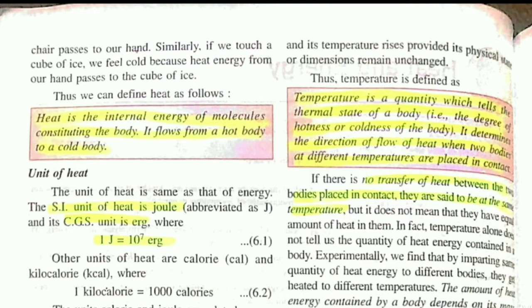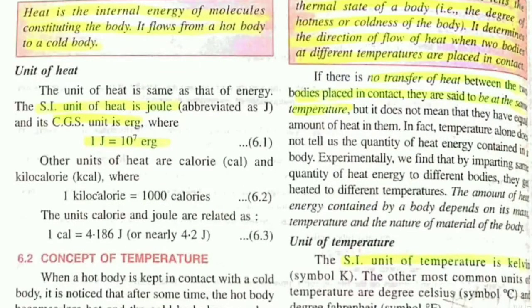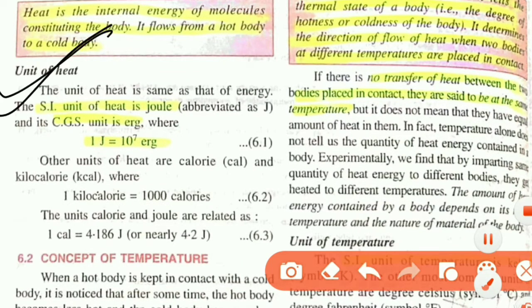As I told you, heat is basically the internal energy of molecules — the energy that flows from a hot body to a cold body. That is the definition of heat. The most important thing is the unit of heat — this is very important. The unit of heat is Joule, with the symbol J. The CGS unit is Erg.